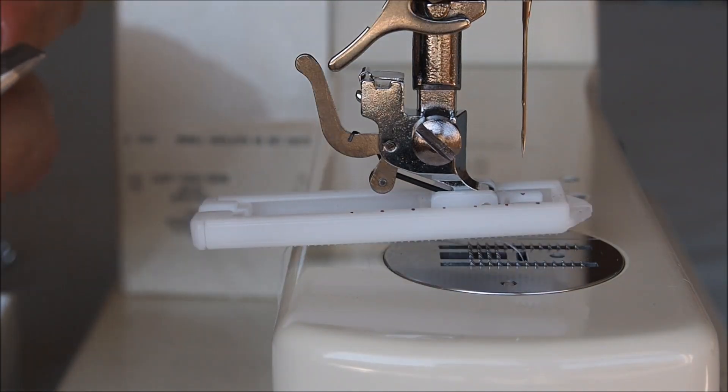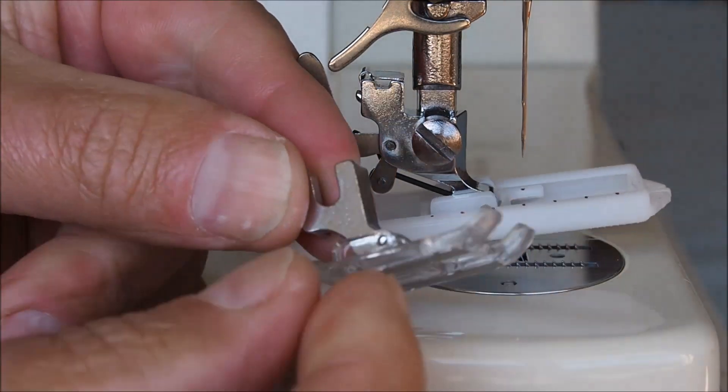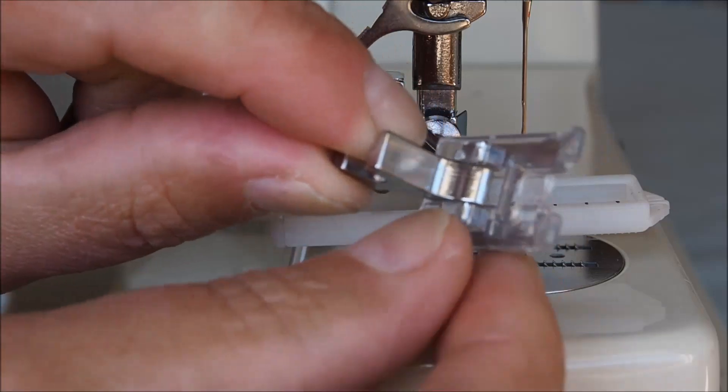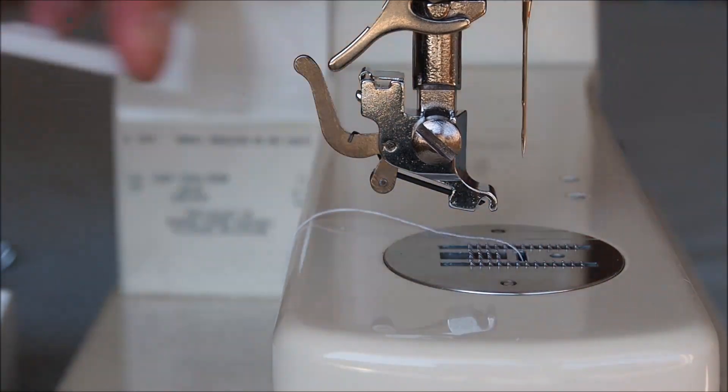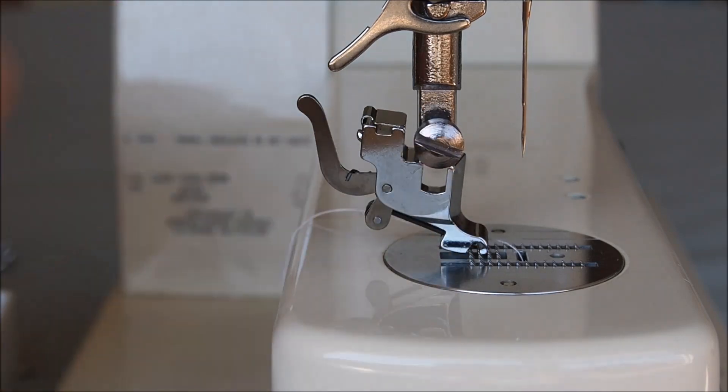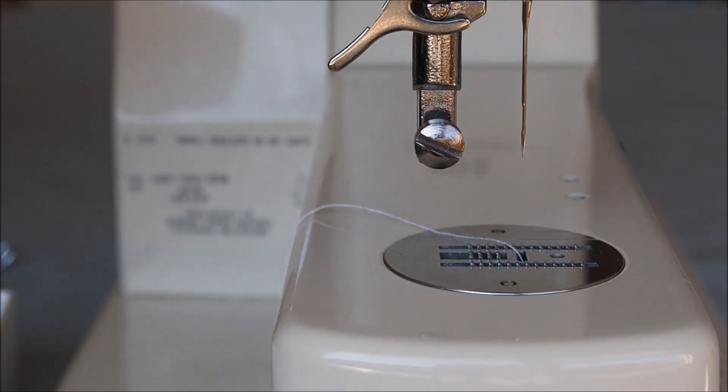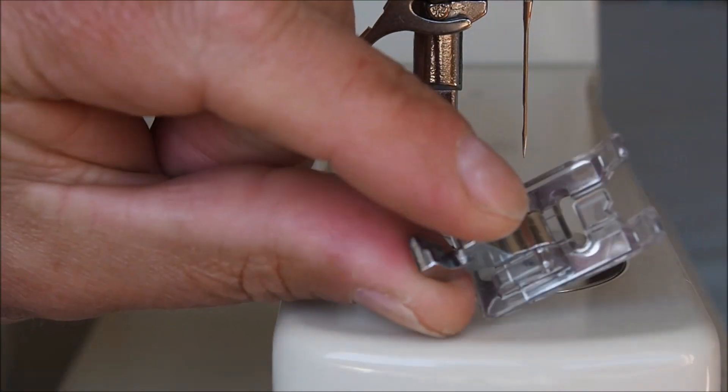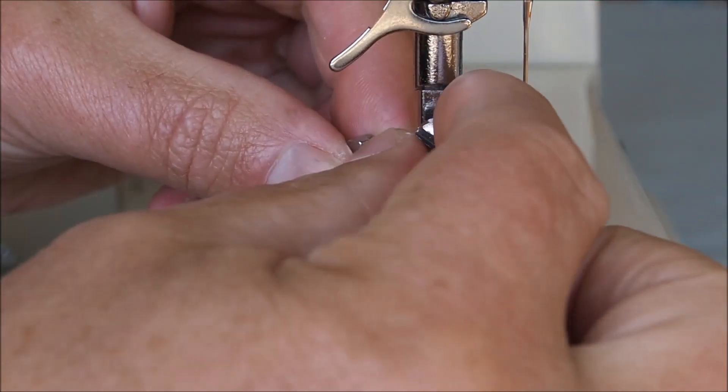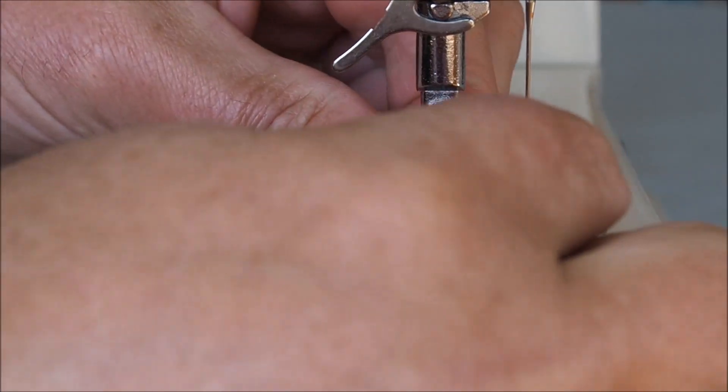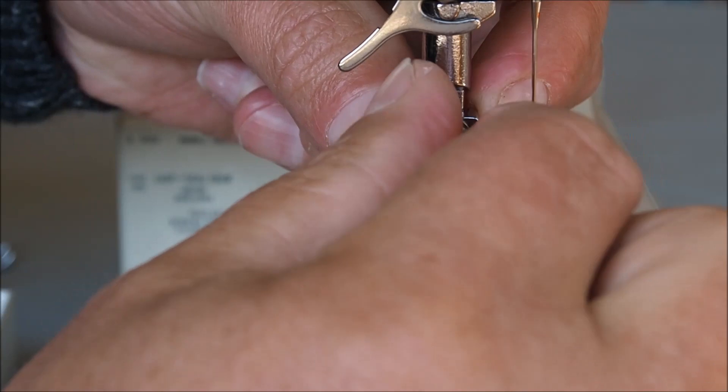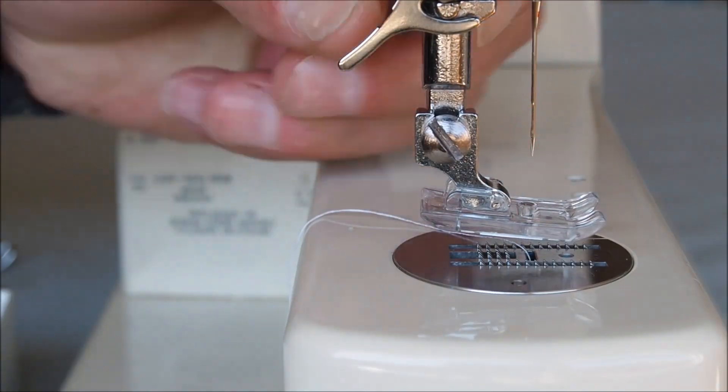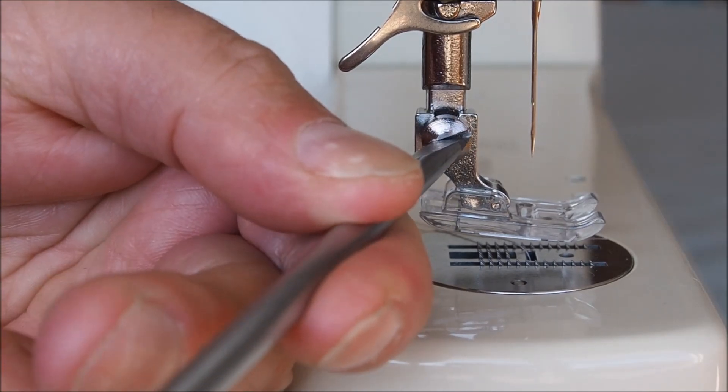The other option as well is you can actually buy feet that have the shank built in. So this is a complete unit. So what you would do in that case is you would remove the shank here quite easily just with a flat screwdriver and attach your foot with a shank included. Sometimes it's easier actually to take the screw right out and just to get it in there. And then away you go with your presser foot including shank.